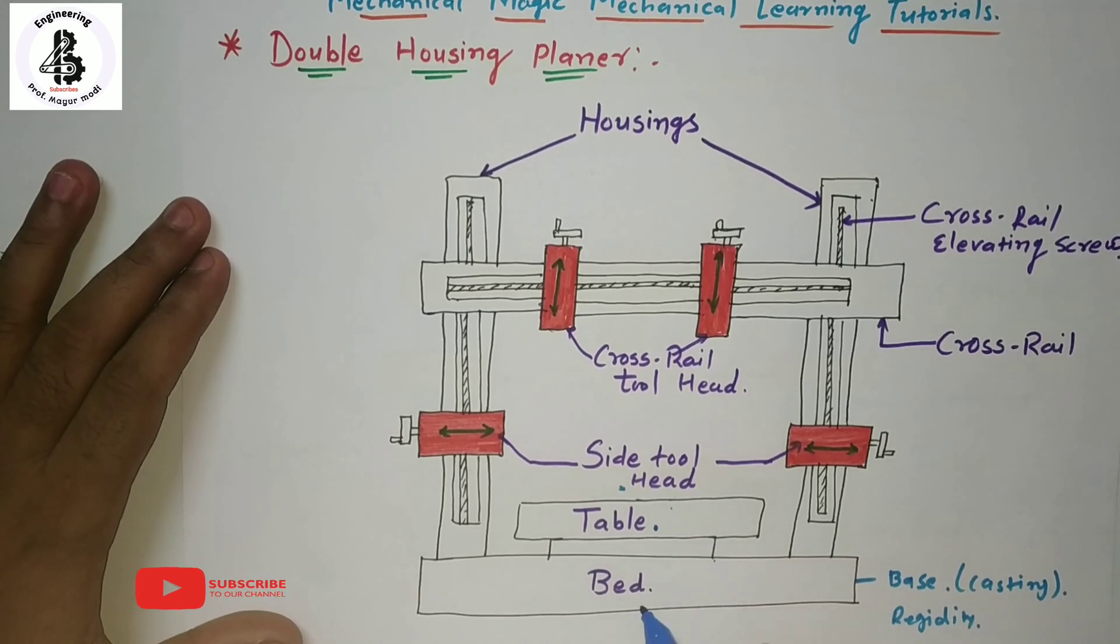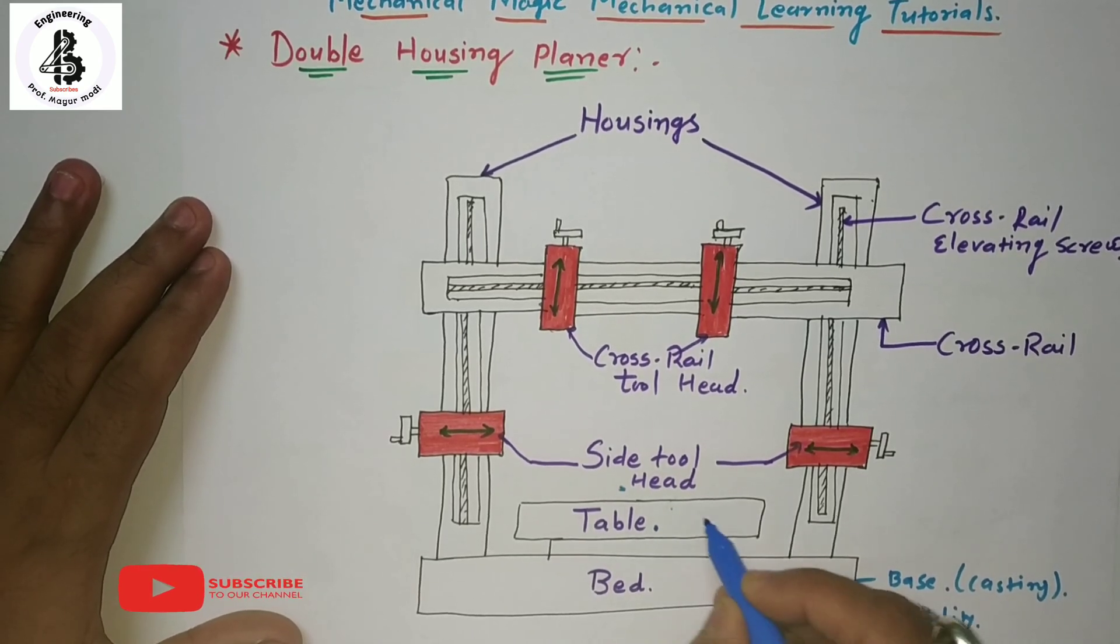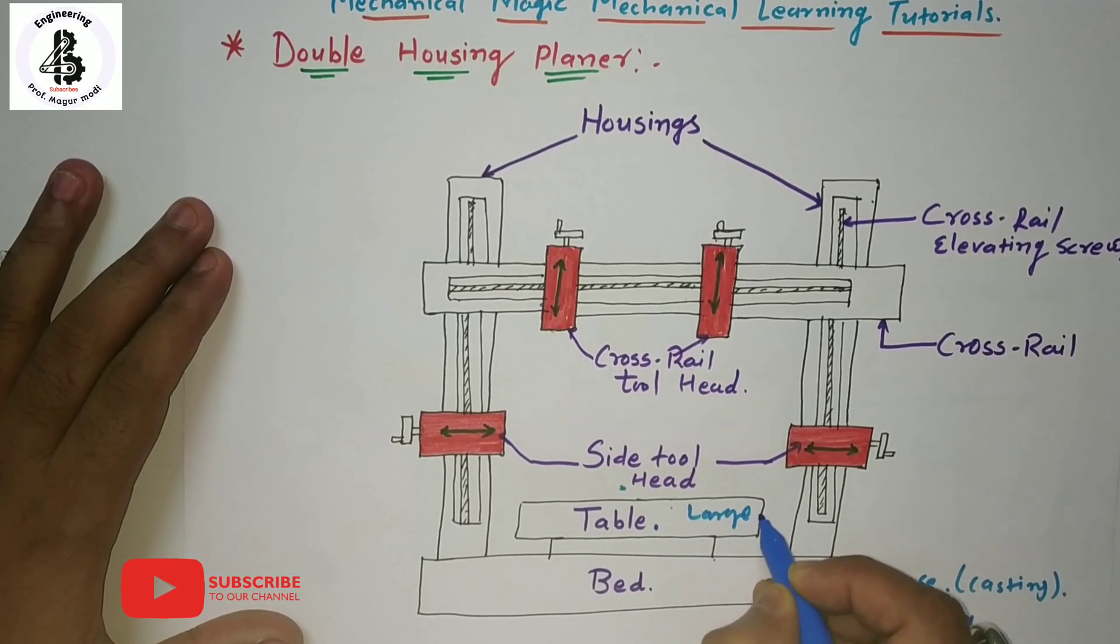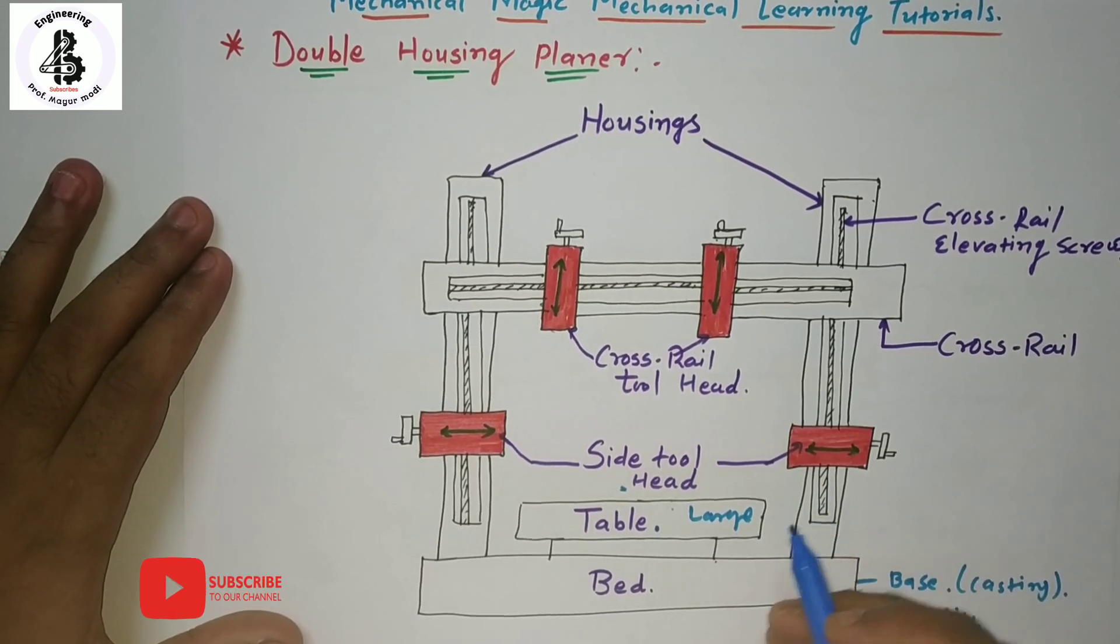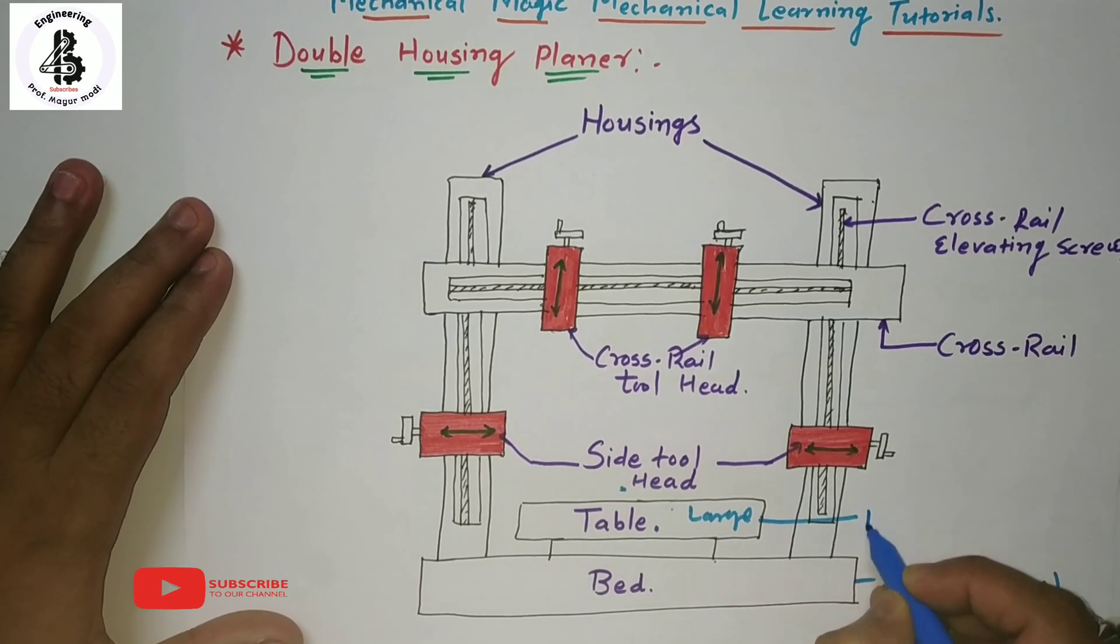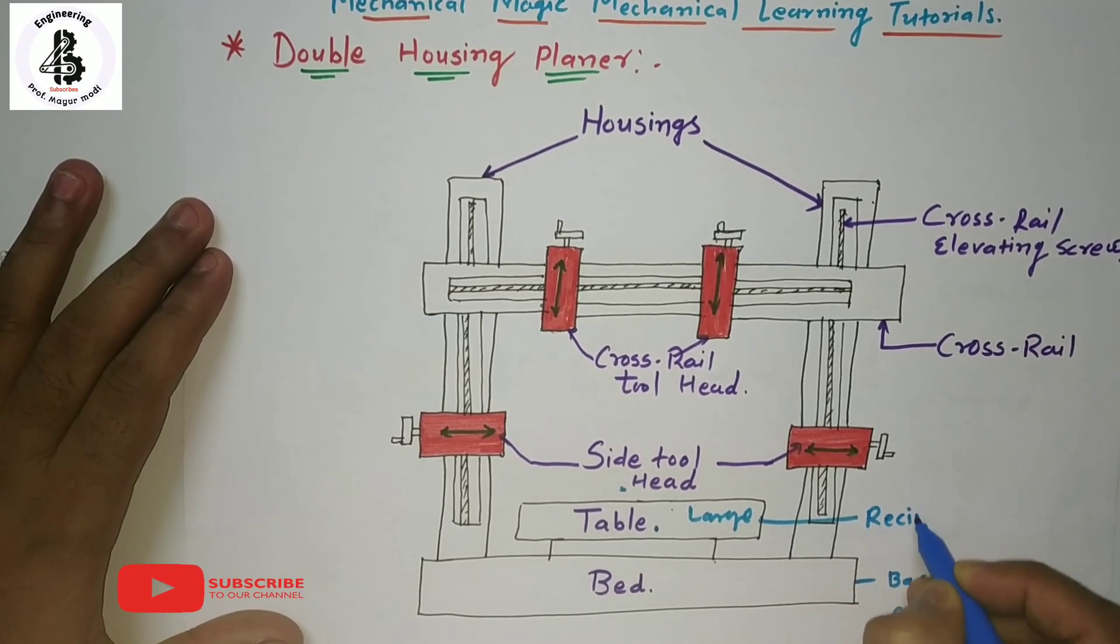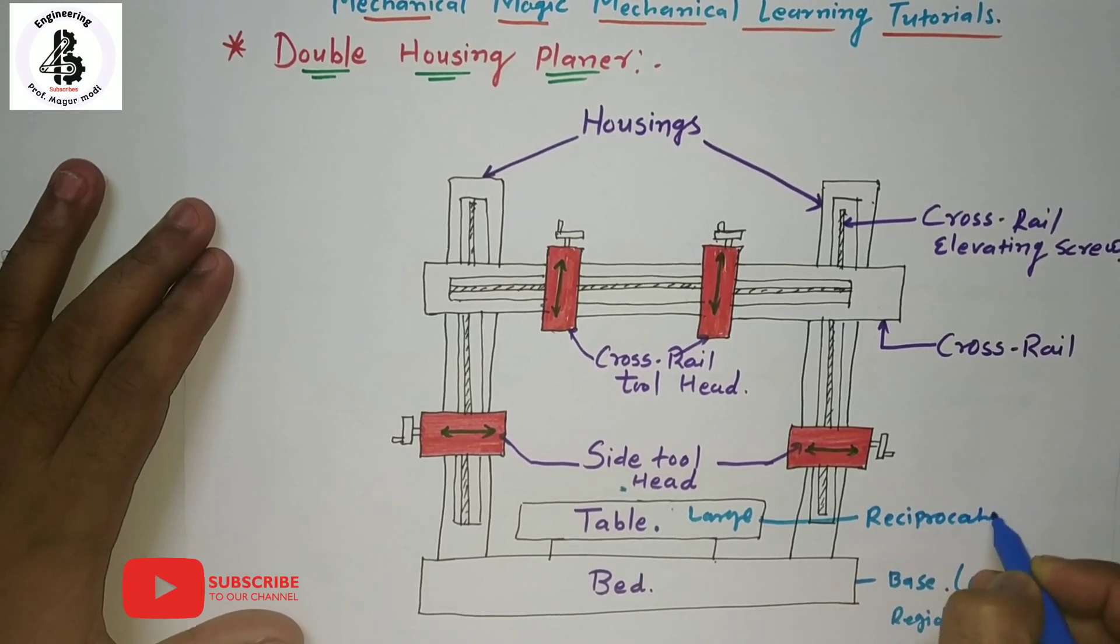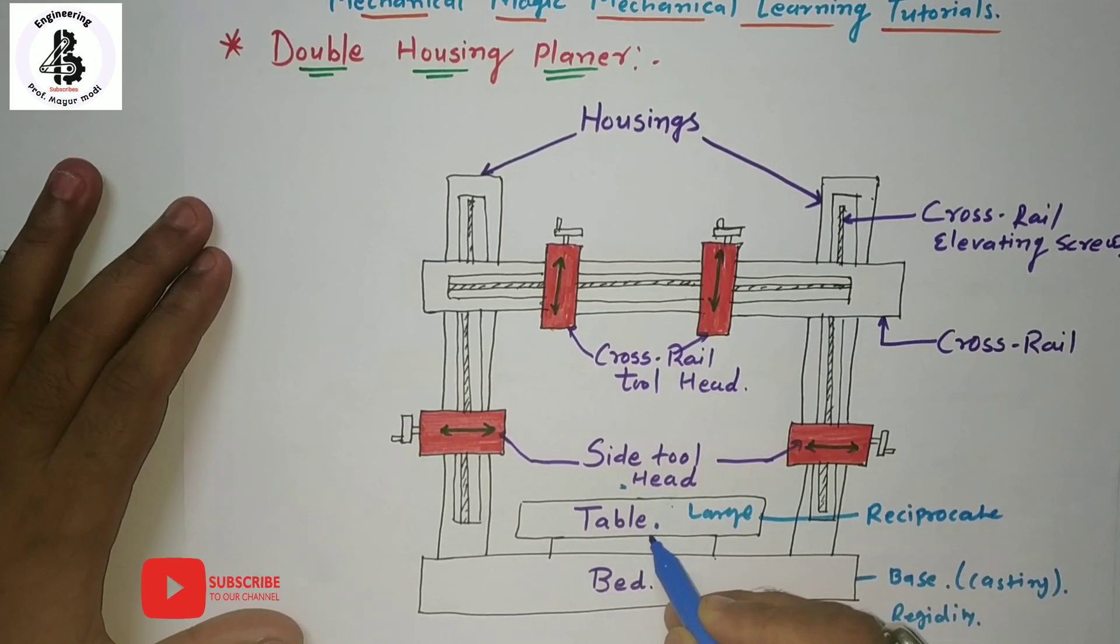The table will be resting onto the bed and that will be having a large surface. The table will be reciprocating, so the movement of the table will be reciprocating.